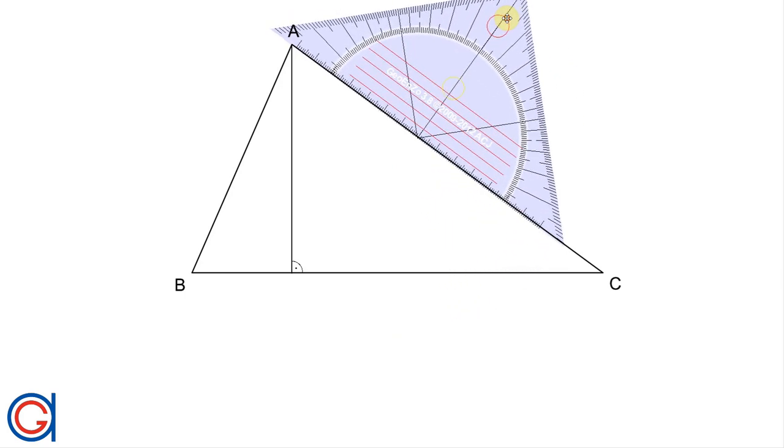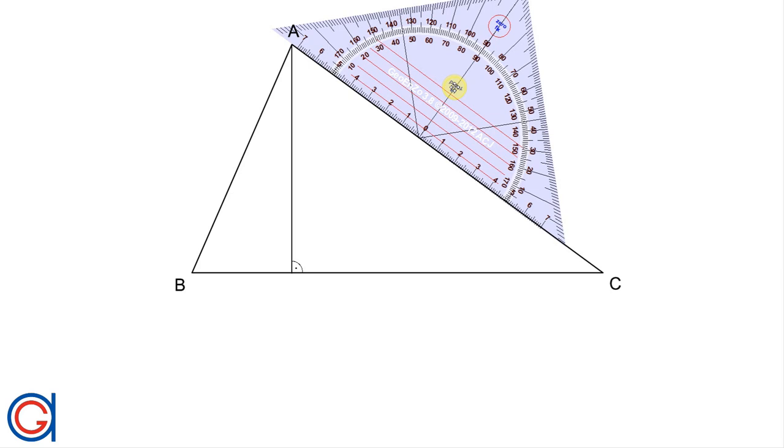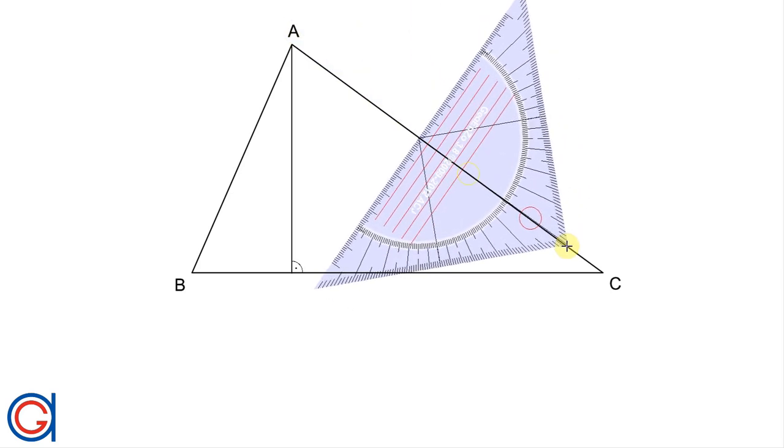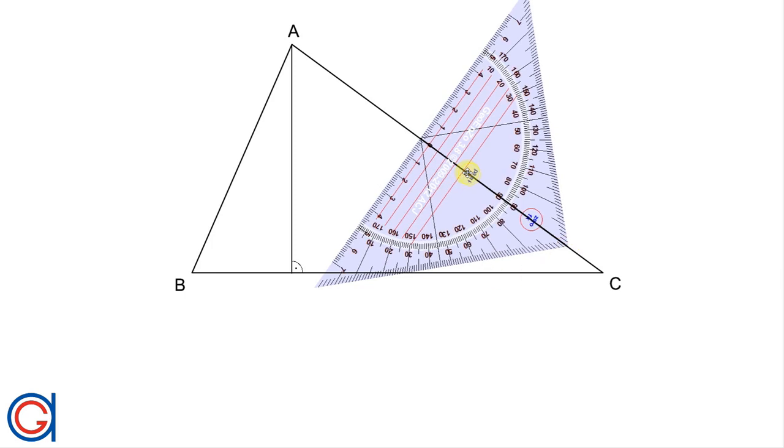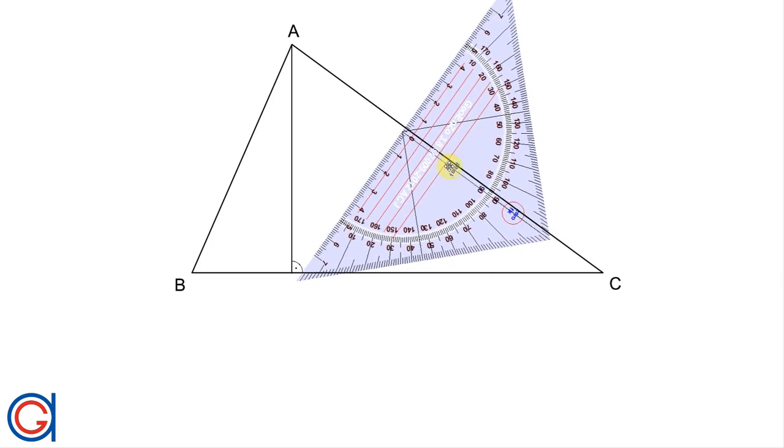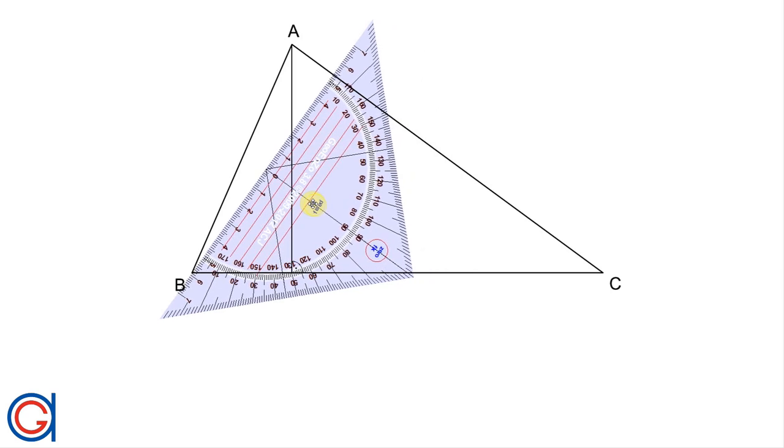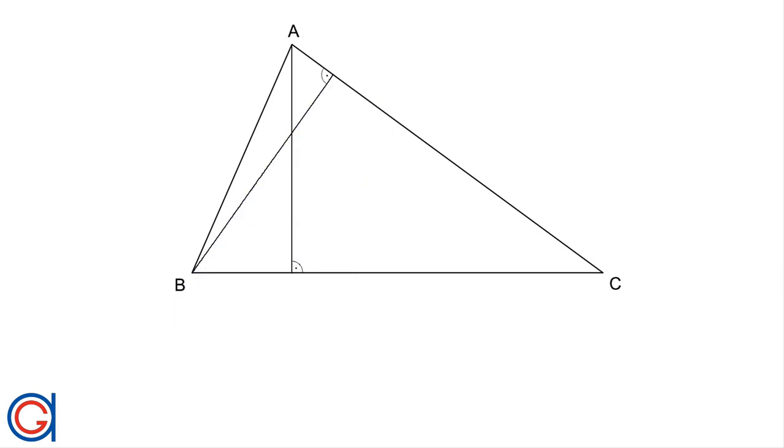Next we are going to do the same thing with the side AC. Setting our protractor to 90 degrees, we are going to join vertex B - we are going to draw a line at 90 degrees to its opposite side. Finally we are going to mark it with the 90 degree symbol.